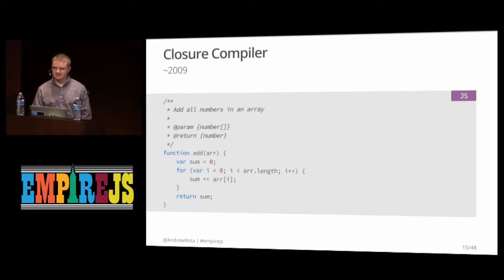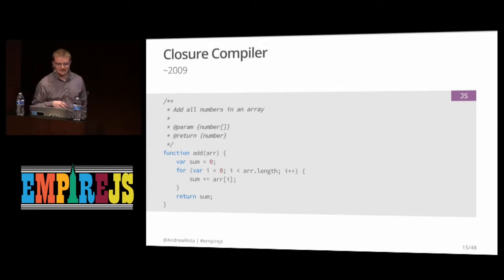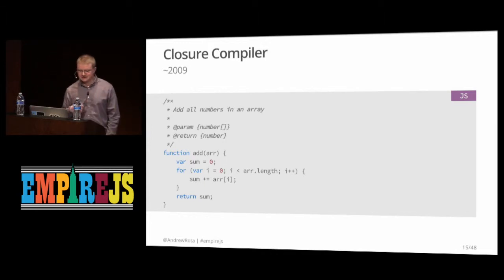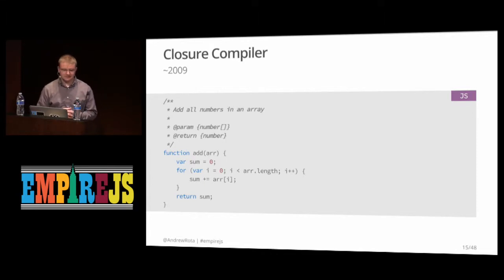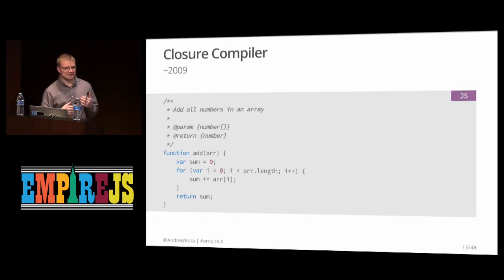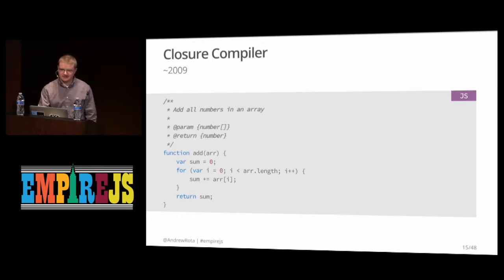Let's fast forward a bit. Google released the Closure Compiler for minifying code. Closure Compiler uses that JSDoc notation we mentioned earlier, so you don't need to change much if you're already doing this. It doesn't just remove comments — it also does some really smart optimizations and, importantly, it does type checks. You get some level of type checking when you run it through the Closure Compiler. It runs in Java, which may be why it never really took off, but it was one of the forerunners of type checking in JavaScript.